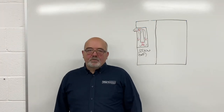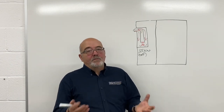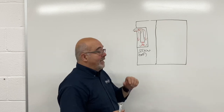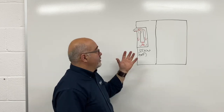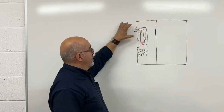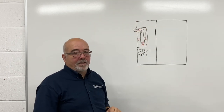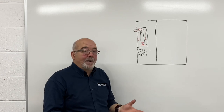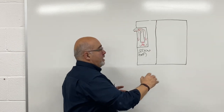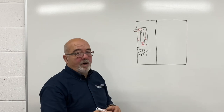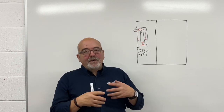Room sealed appliance ventilation: as you should already be aware, the difference between a room sealed appliance and an open-flued appliance is that it takes its combustion air from outside directly into the appliance. Here I've shown a relatively modern setup with a fan-assisted flue bringing combustion products out and combustion air in. So all we're concerned about is cooling air in the actual compartment. If it's in a room without a compartment, it wouldn't be a problem — but if it has a compartment, check the manufacturer's instructions.